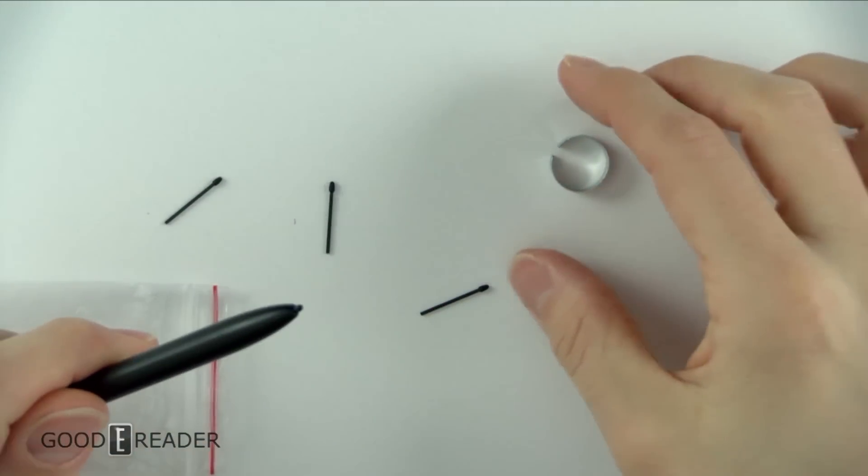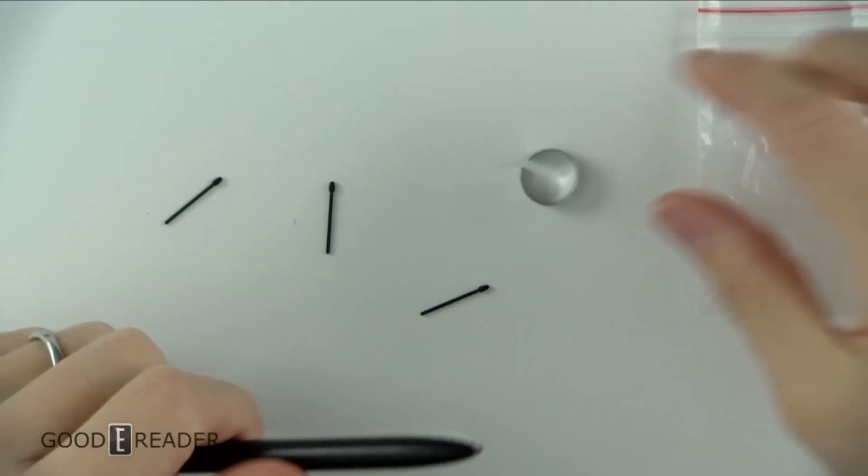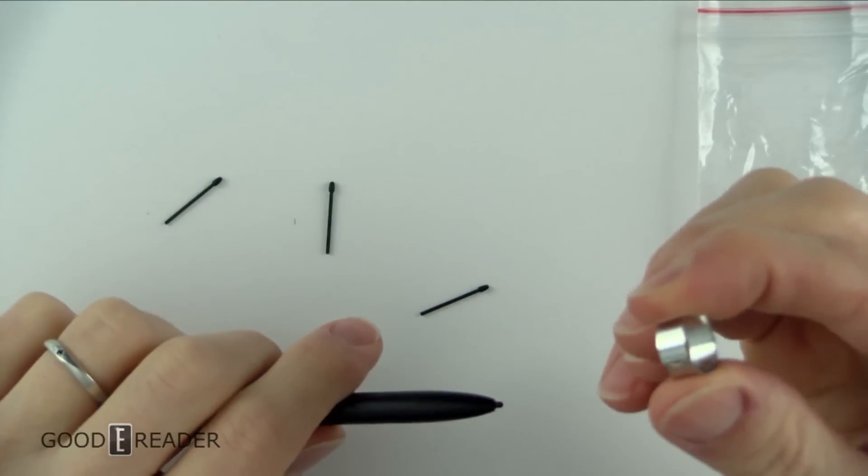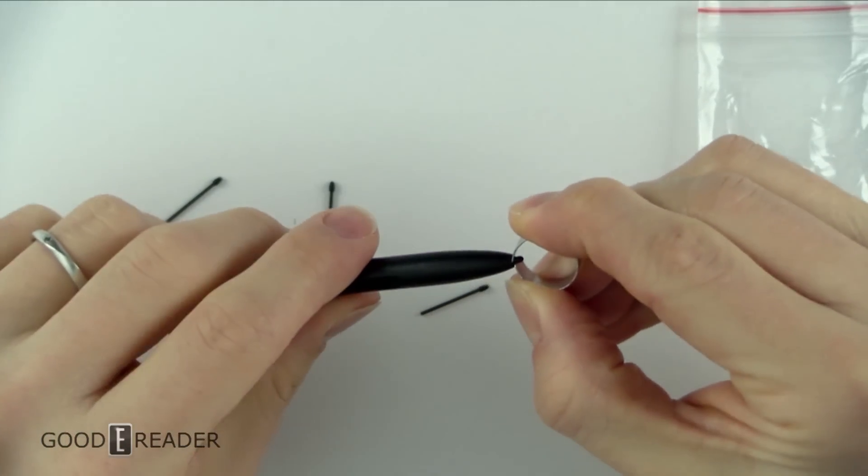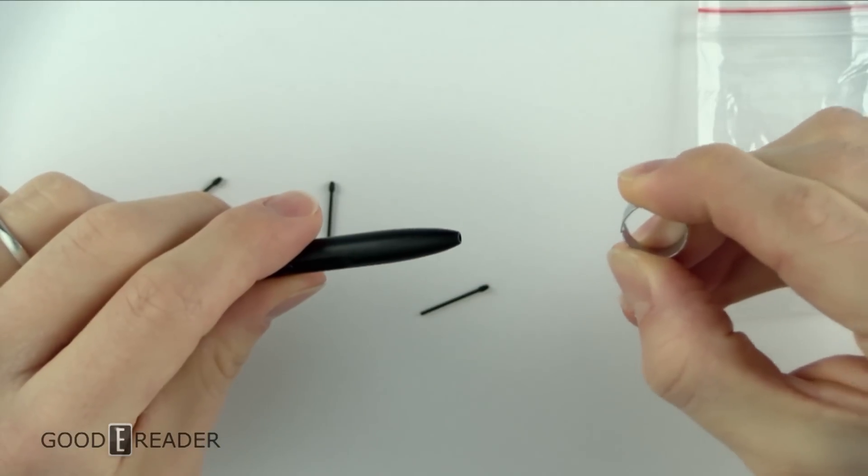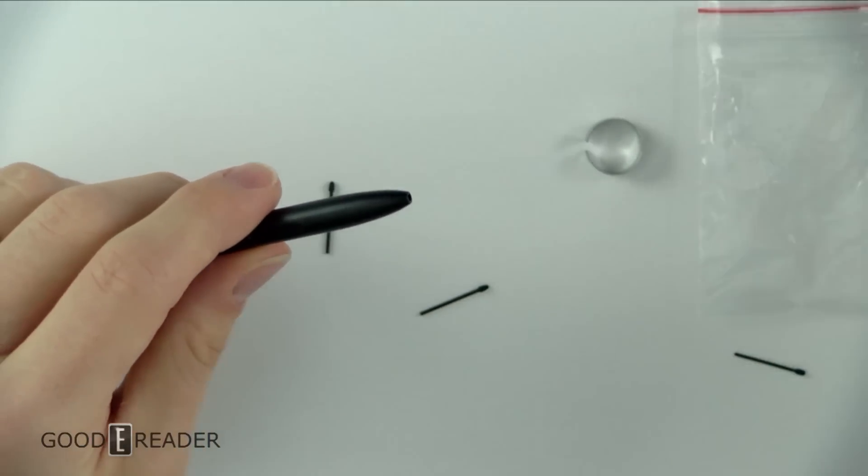Changing the nib on your stylus is extremely easy. Everything comes in this ziplock pouch here. All you need to do is use the grasper tool like this. Grab the tip of the stylus that is already in there and take it out. Now put that one aside if it's all used up.